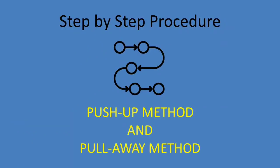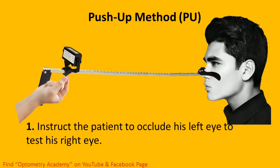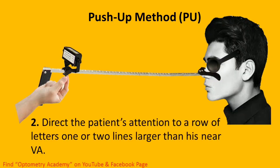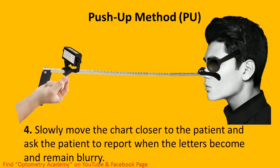Step-by-step procedure — there are two methods: push-up method and pull-away method. For the push-up method, ask the patient to occlude his left eye to test his right eye. Direct the patient's attention to a row of letters one or two lines larger than his near visual acuity. Instruct the patient to keep the letters clear, then slowly move the chart closer to the patient and ask the patient to report when the letters become and remain blurry.